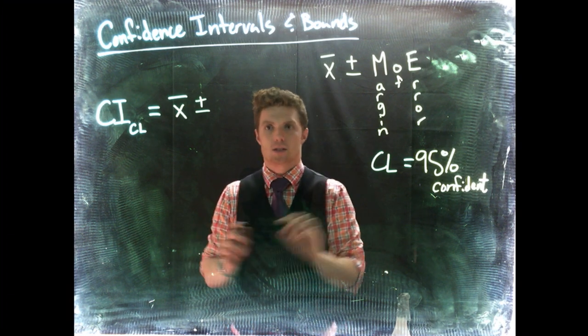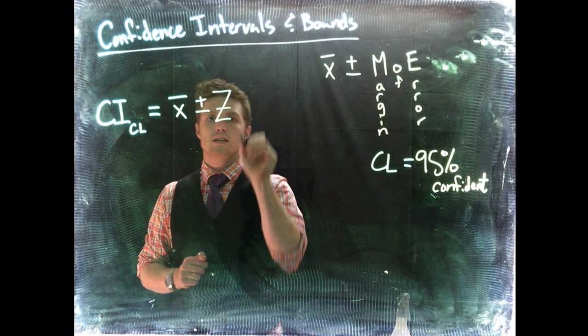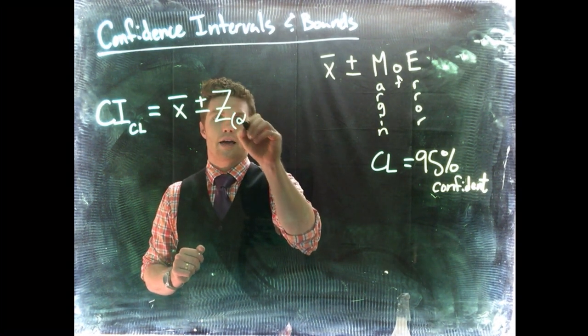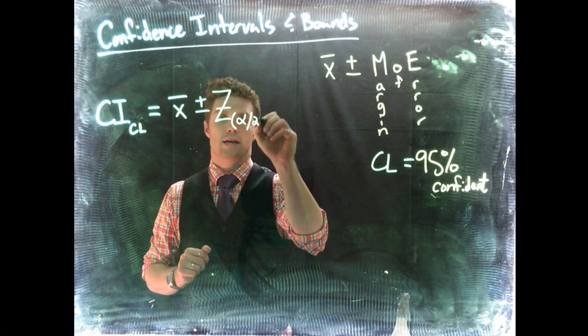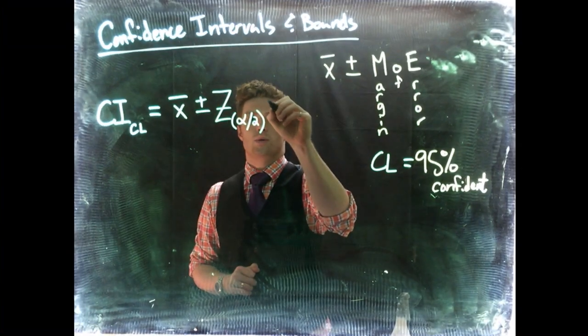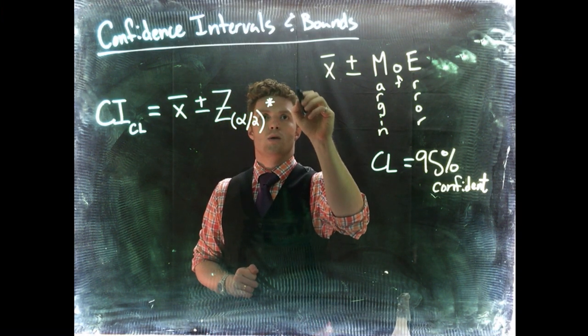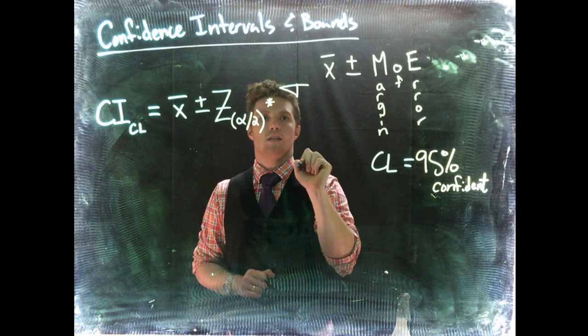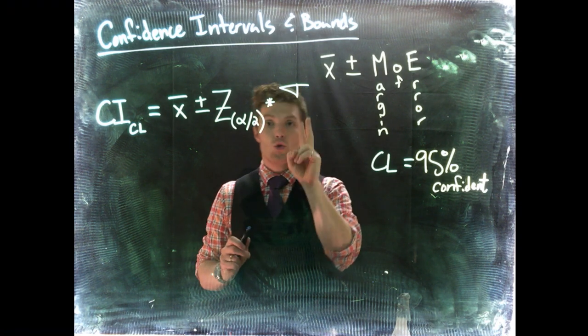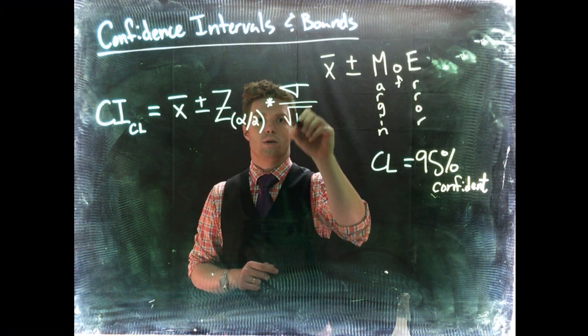Alright, so the margin of error, here's how we get it. It is formed by z. We've done z scores before, so this isn't too crazy. And then we're going to do alpha divided by 2. I'm going to explain what this is in just a second. And then we're going to multiply z by, we're going to do sigma. Hold on. So there's two ways that we can do this.